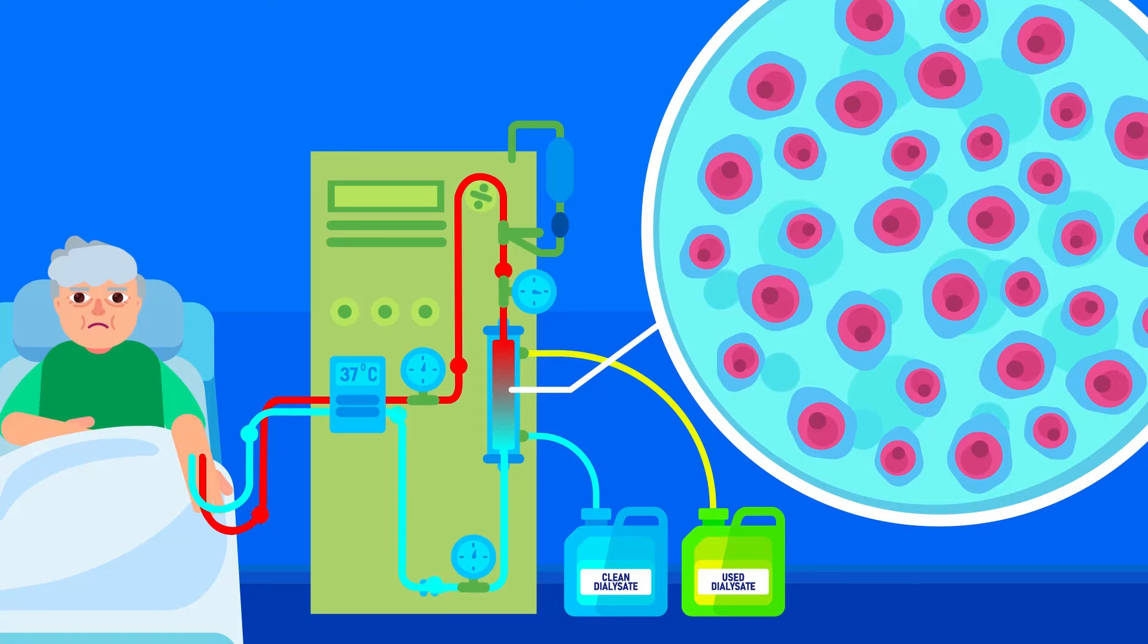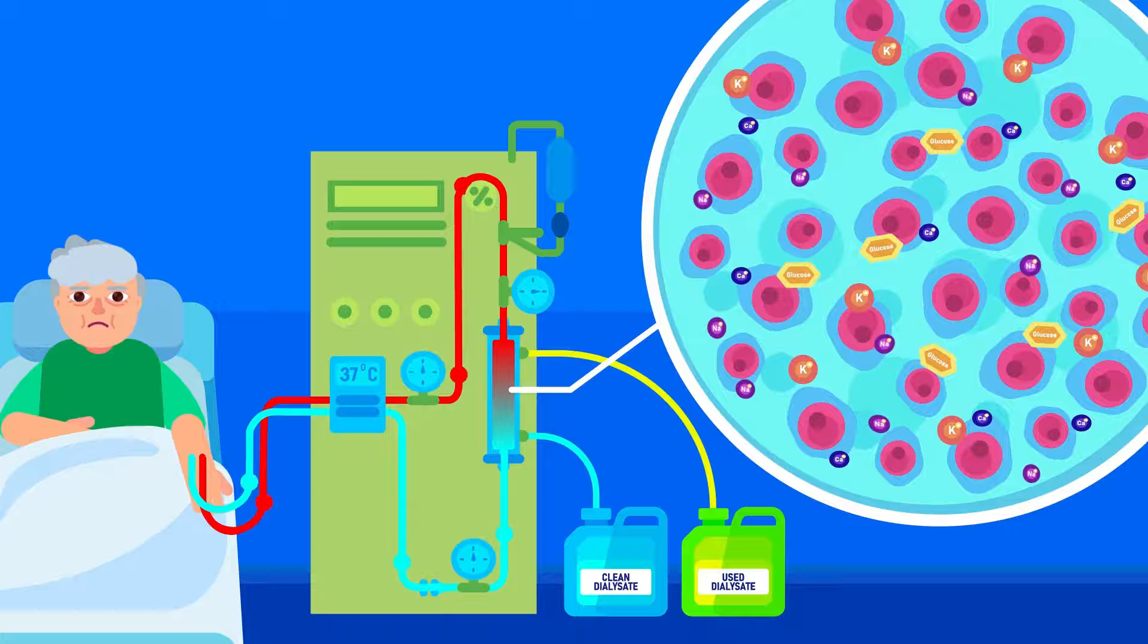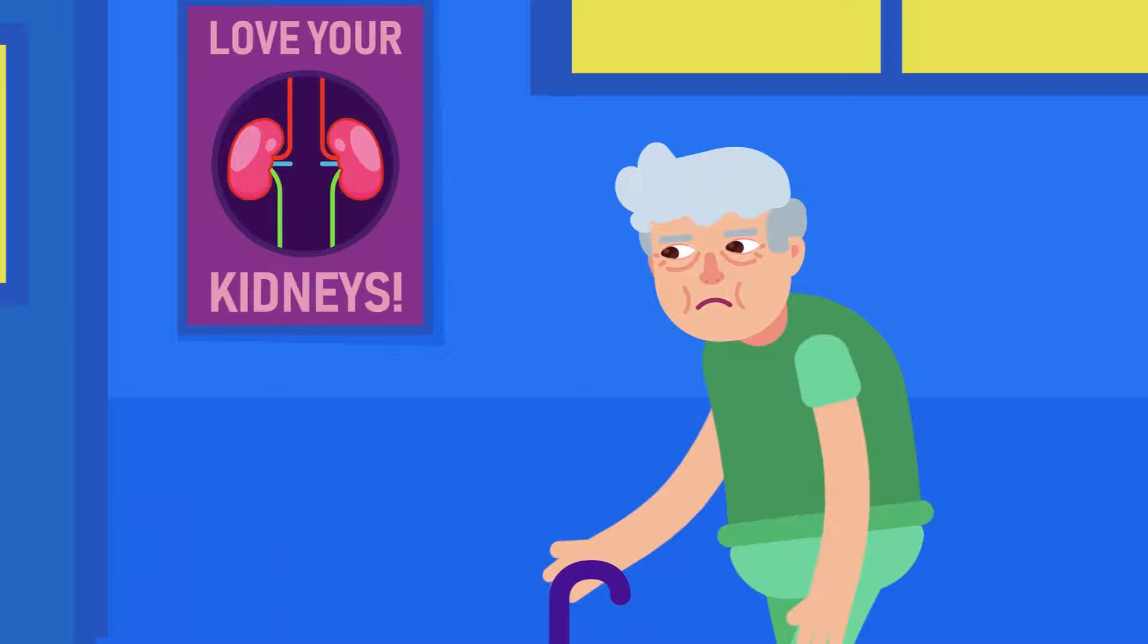The sterile dialysis fluid surrounds the cellophane tube and contains regulated amounts of dissolved salts and sugars. Once a kidney fails, there are very rare chances of it healing. Hence this procedure has to be carried out until the kidney is replaced with a new one.